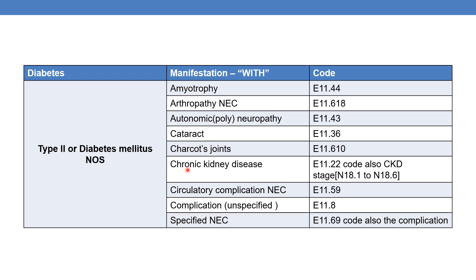For diabetes mellitus with chronic kidney disease, the code is E11.22. In this case, you also need to code the stage of CKD, which comes under the series N18.1 through N18.6. For diabetes mellitus with circulatory complication NEC, the code is E11.59. For diabetes mellitus with unspecified complication, the code is E11.8.